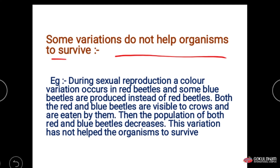During sexual reproduction, a color variation occurs in red beetles and some beetles having blue color are produced. The blue color is easily visible to the crow, and the crow can eat those blue beetles. Then the population of both the red and blue beetles continuously decreases, so this variation does not help the organism to survive.